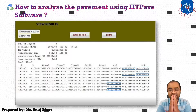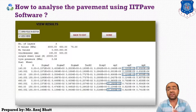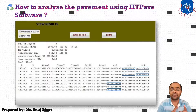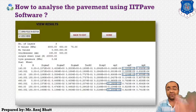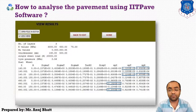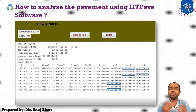For the cemented base, the tensile strains below the cemented layer — that is sigma T and sigma R — are from the fourth and fifth columns from the left, and these are needed for cumulative fatigue damage analysis.